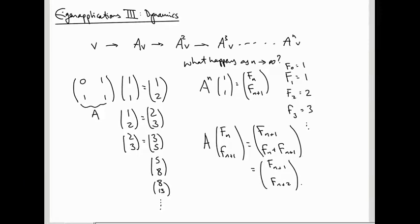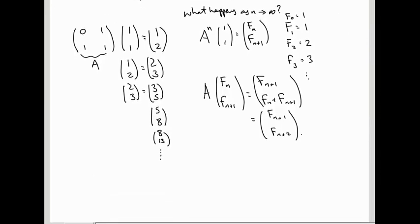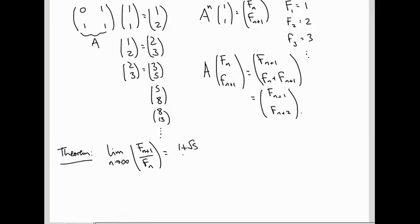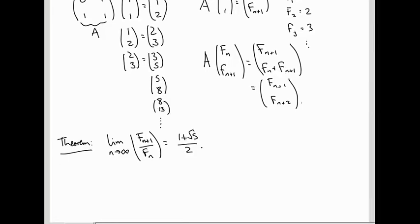So what happens as n goes to infinity? Well, these numbers get infinitely large — they tend to infinity, of course — but they do so in a specific way. So here's the theorem: the limit as n goes to infinity of Fibonacci number Fn+1 over Fn is the golden ratio, (1 + √5) / 2. Isn't that cool? That's really cool. So we're going to prove this using eigenvectors and eigenvalues.